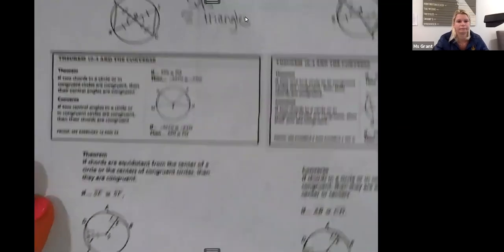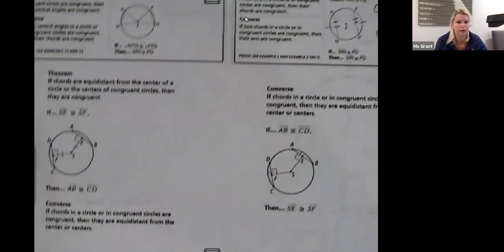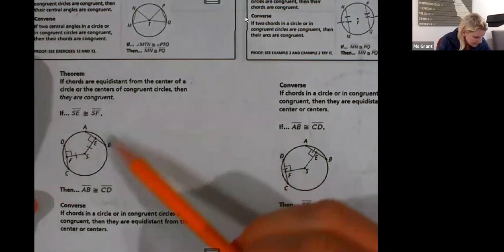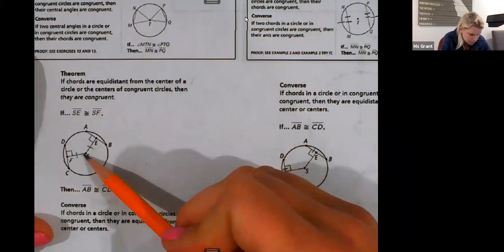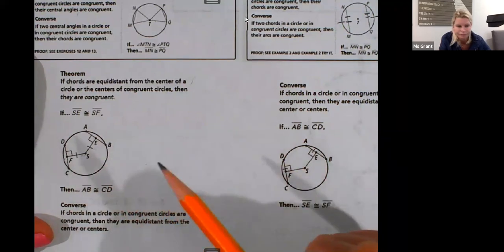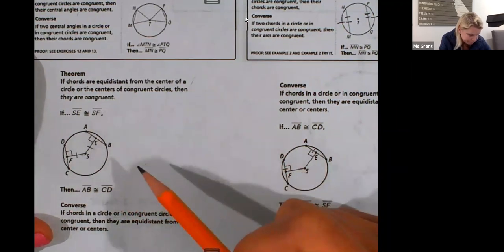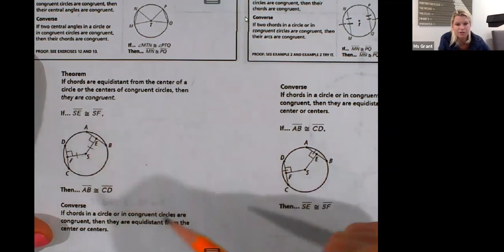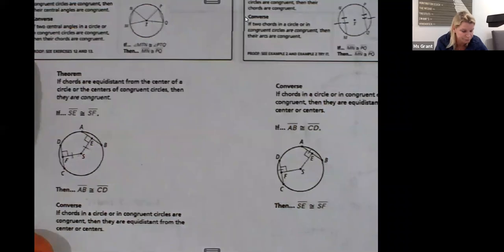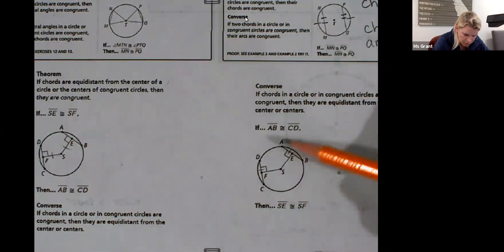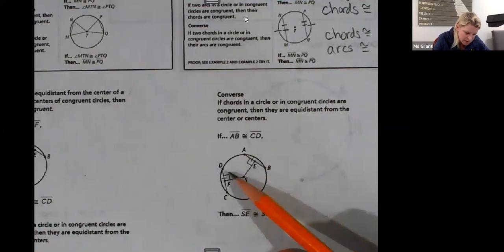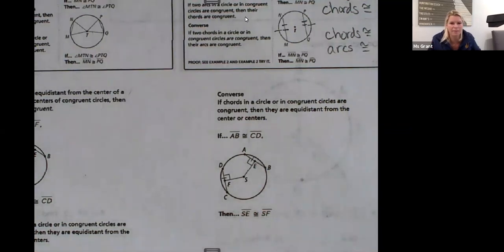Another theorem. If chords are equidistant from the center of the circle, see these chords are the same distance from the center, then they are congruent. SE is congruent to SF. So there's a lot happening, but there's a lot of info on chords. This one is the converse. If chords in a circle are congruent, then they're the same distance from the center. So if the chords are congruent, AB is congruent to DC, then they're the same distance from the center, which, you know, that makes sense, right.